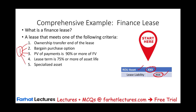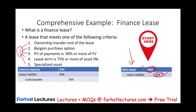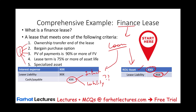In the prior session we also looked at an operating lease. The initial journal entry is the same whether it's a finance lease or an operating lease. Now the subsequent payments are a little bit different. For a finance lease, when we make the payment, we're going to spread the payment between interest and the liability itself. A finance lease is similar to a loan, and when you have a loan, we have to record interest. Therefore, we record interest on the finance lease.